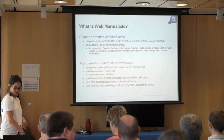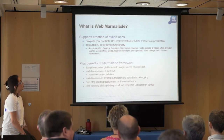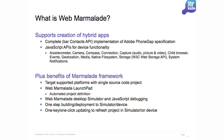So what is Web Marmalade? Web Marmalade basically supports the creation of hybrid apps. The apps it produces come packaged as native app installers ready for deployment to app stores. At the moment we support iOS and Android. It provides a complete implementation of the Adobe PhoneGap app specification and includes JavaScript APIs for accessing device functionality.